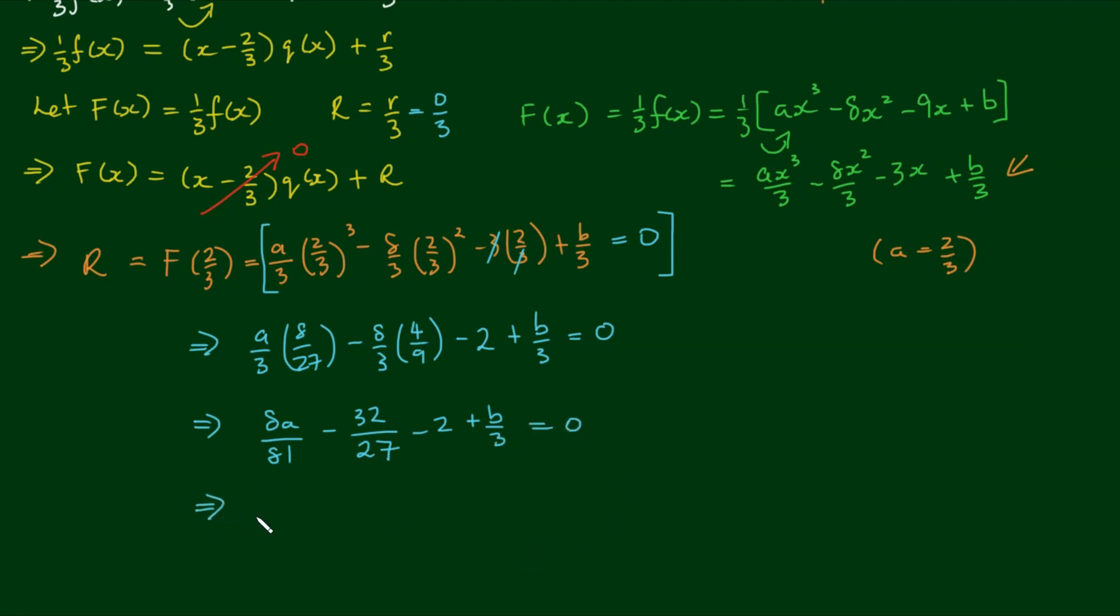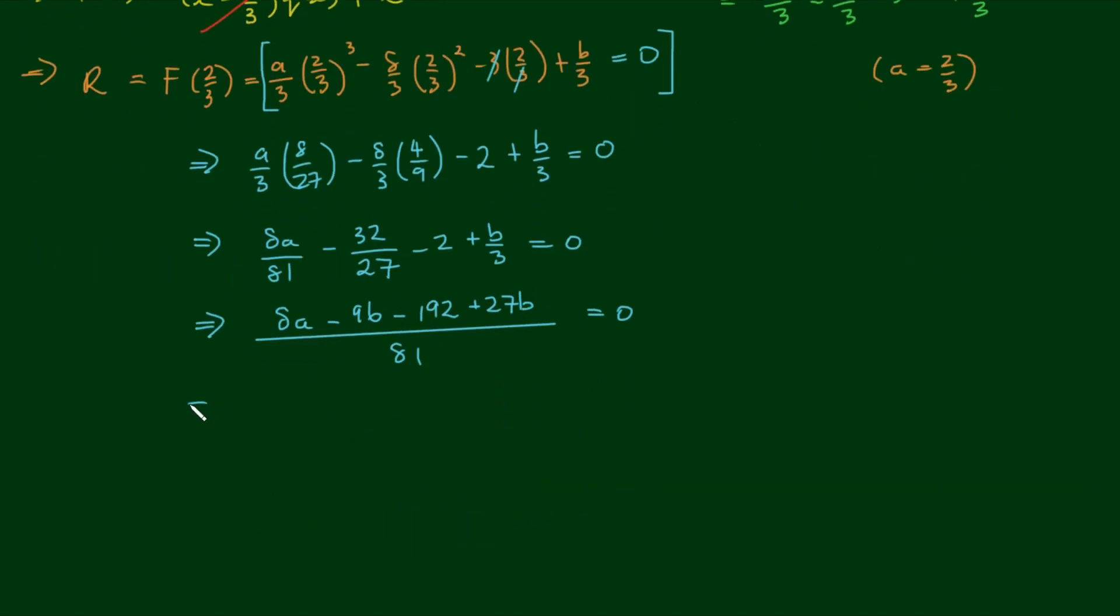Now, if we get ourselves a common denominator, which is actually 81, we'll have 8a minus 96 minus 192 plus 27b over 81 equals 0. Let's leave all the unknowns on 1 side. So we have 8a plus 27b is equal to 96 plus 192, which equals 258. Let's call this equation 1, and we'll move on to part 2 now.